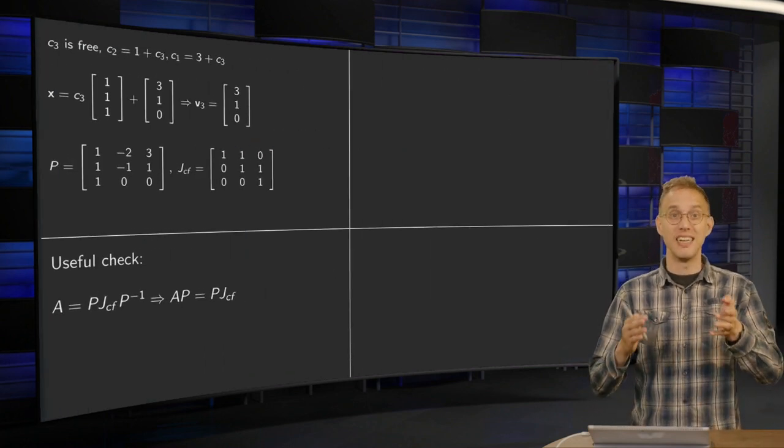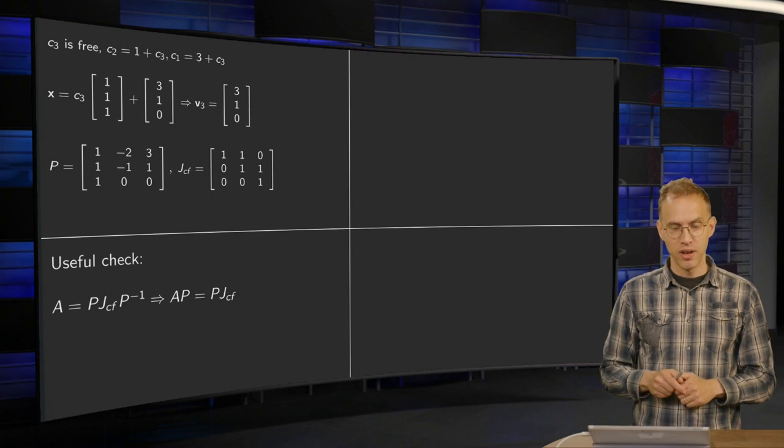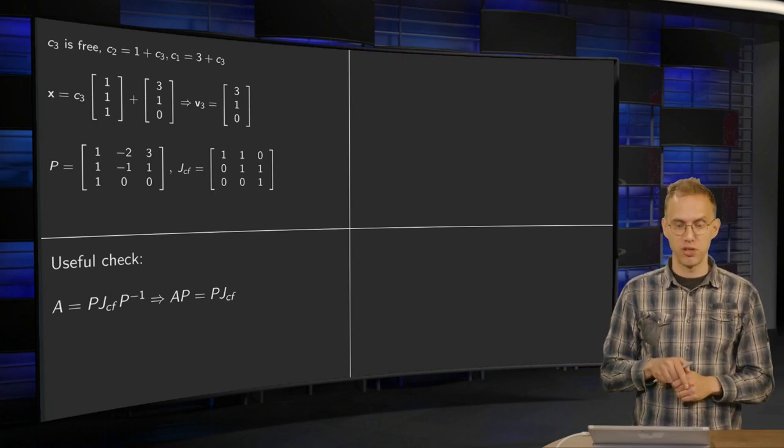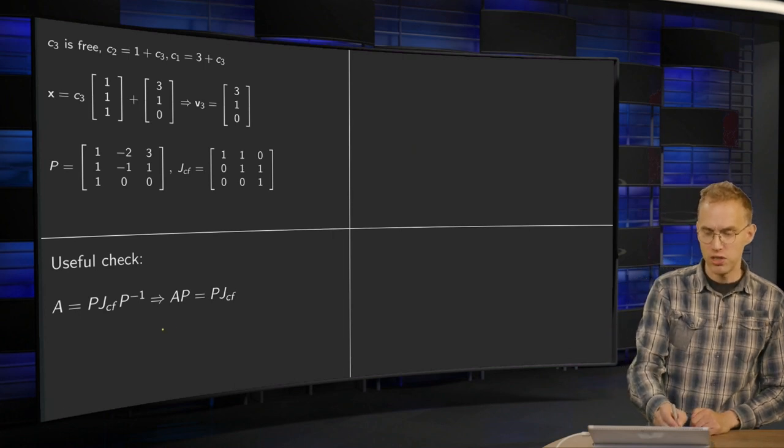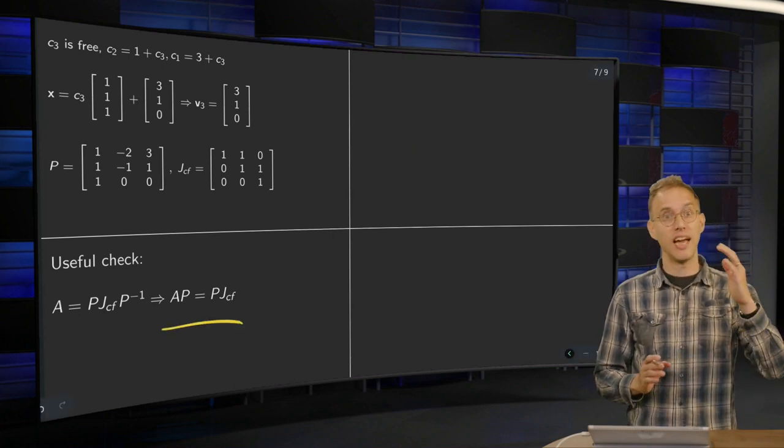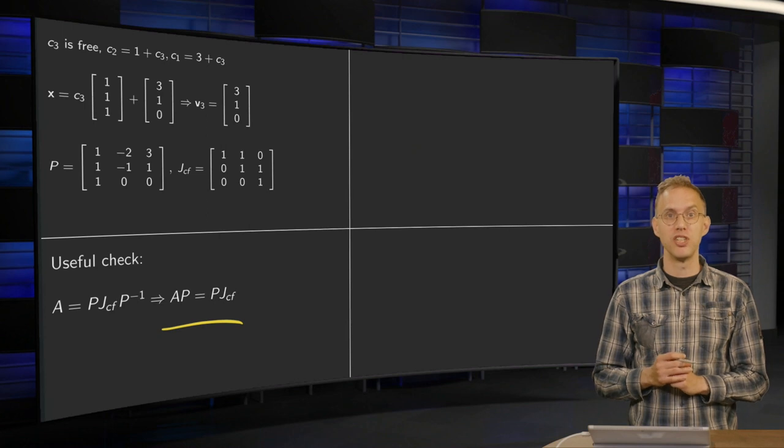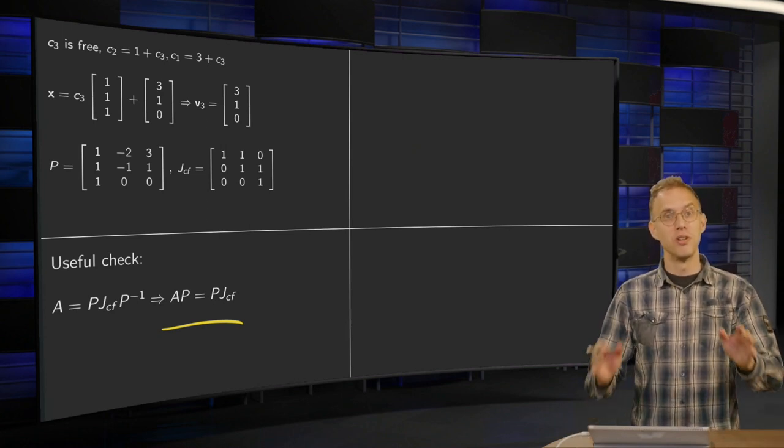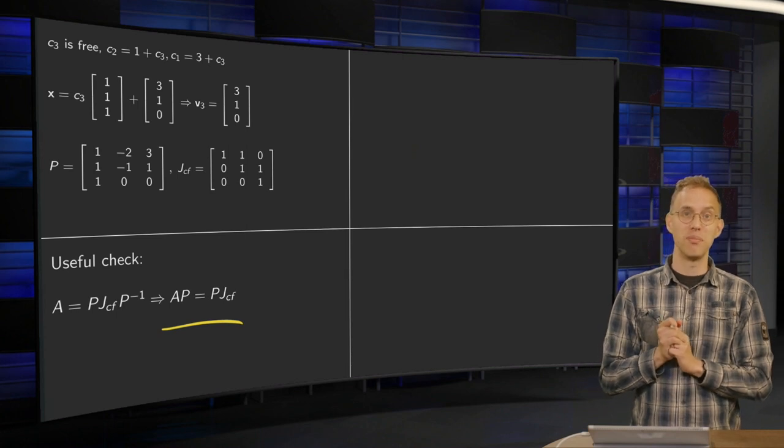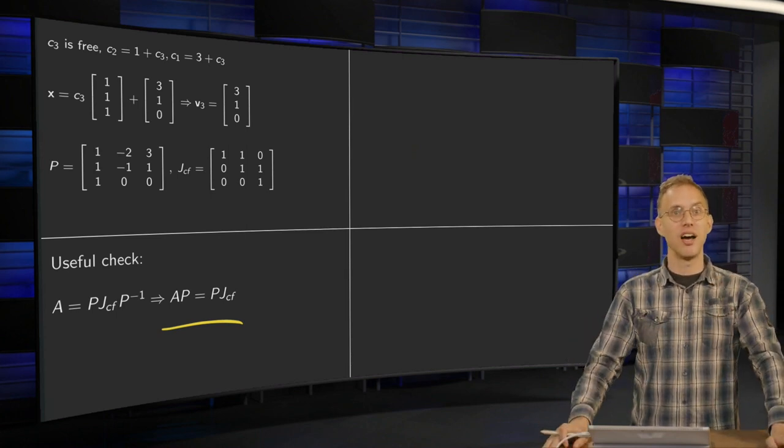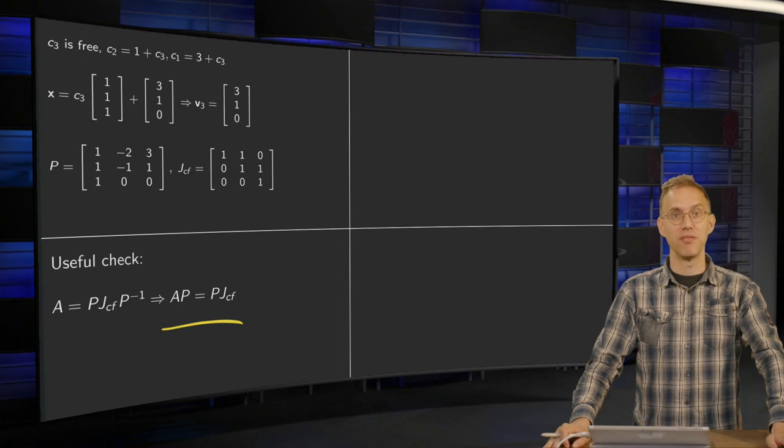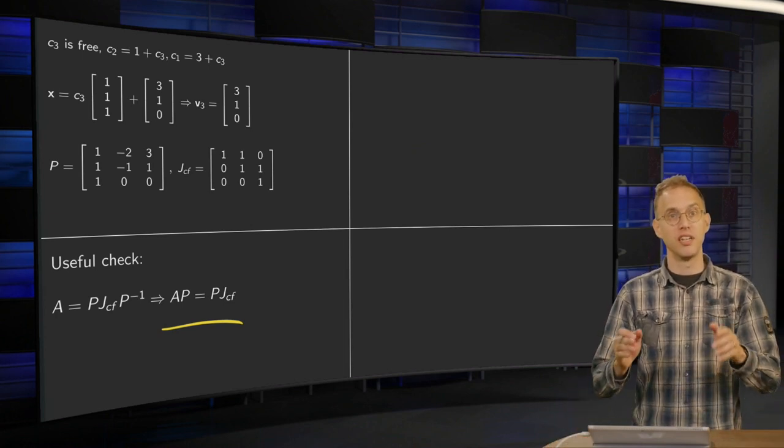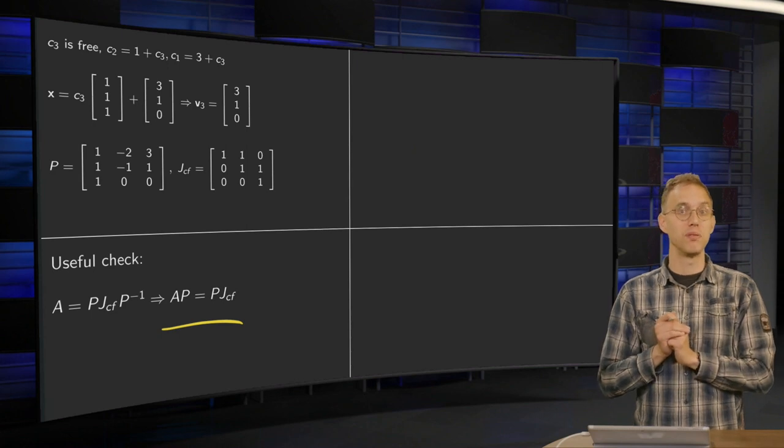And of course, it's always useful to check that indeed you didn't make any errors. You need to check whether A equals P JCF P inverse, or usually it's a bit easier to check whether indeed we have A times P equals P times JCF. I will leave that check up to you to verify that we didn't make any mistakes. So this is how you can find the JCF of a matrix A and the matrix P such that A equals P times JCF times P inverse.